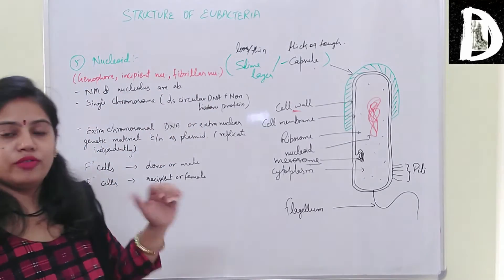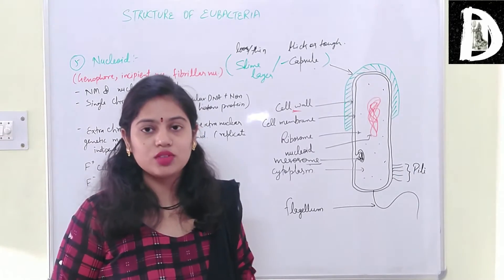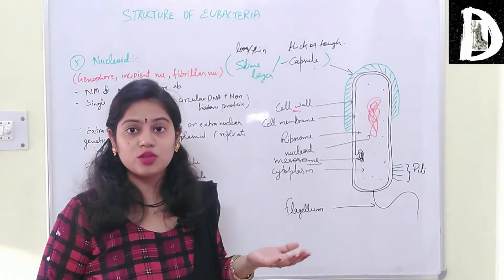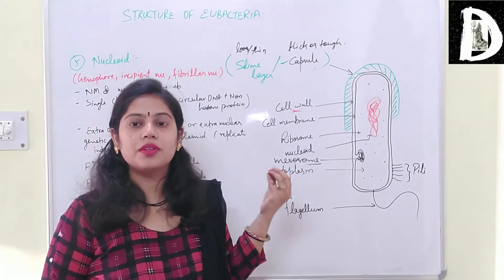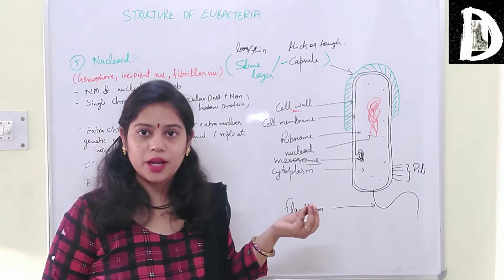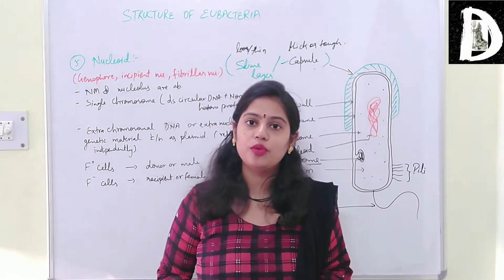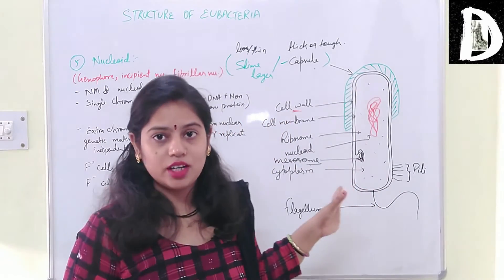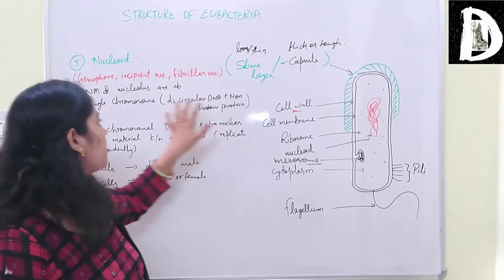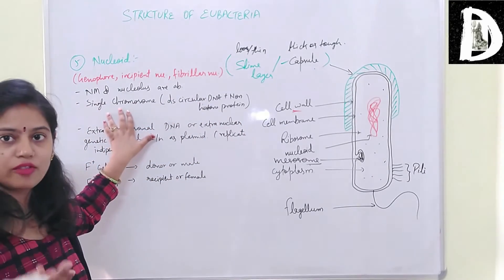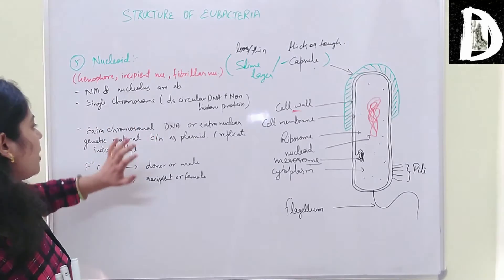These names exist because the nuclear membrane and true nucleus are absent, making it a thread-like structure in the cytoplasm with no membrane. The nucleoid contains double-stranded circular DNA associated with non-histone proteins. In normal eukaryotic cells, double-stranded DNA plus histone proteins form chromosomes, but in bacteria it is circular DNA with non-histone proteins forming a single chromosome.